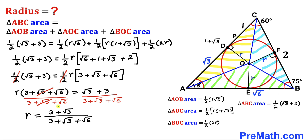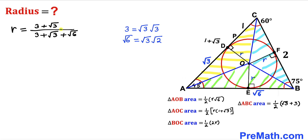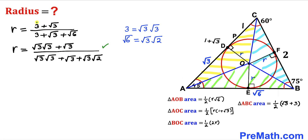Our radius R = (3 + √3) / (3 + √3 + √6). To simplify, I replace 3 with √3 × √3, and likewise √6 in the denominator with √3 × √2. So numerator becomes √3·√3 + √3, and denominator becomes √3·√3 + √3 + √3·√2. We can see that √3 is a common factor in both numerator and denominator.